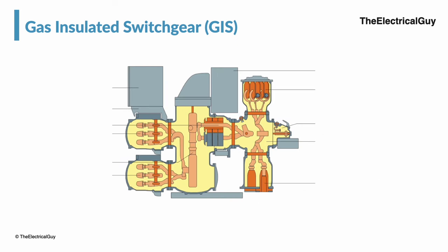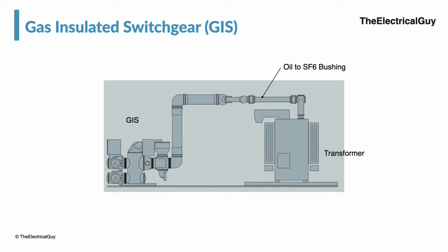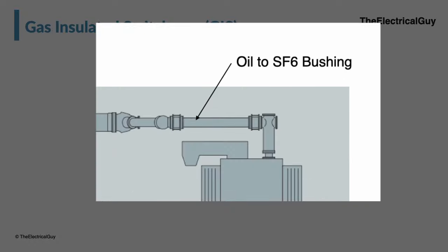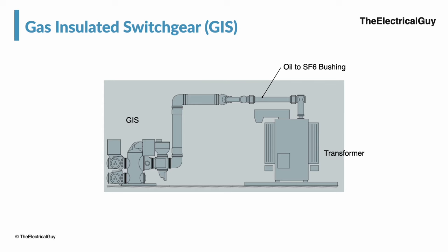Since all the switchgear are connected together and insulated with SF6 gas, direct connection of a transformer or overhead line is not possible. To allow the connection of transformer and incoming supply, we need to use bushings. It can be oil-to-SF6 bushings, which facilitate the connection between the transformer and GIS, or it can be an air-to-SF6 bushing, which allows the connection between an overhead line and GIS. Bushings are really important in case of GIS.